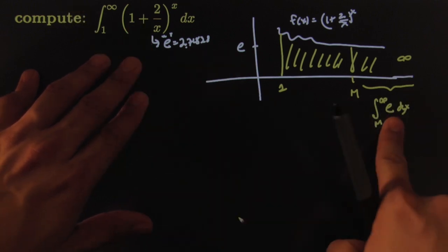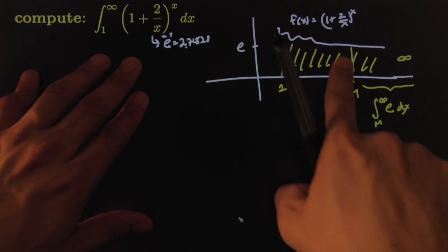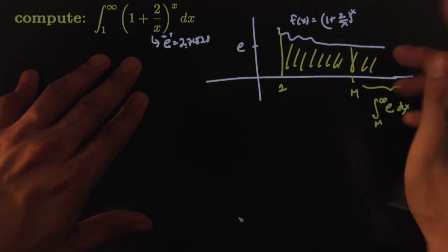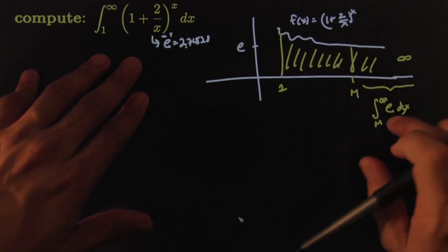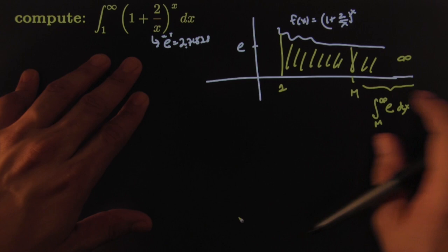This is what this one behaves like. It behaves like just adding e, a rectangle that is e in height and infinitely wide.